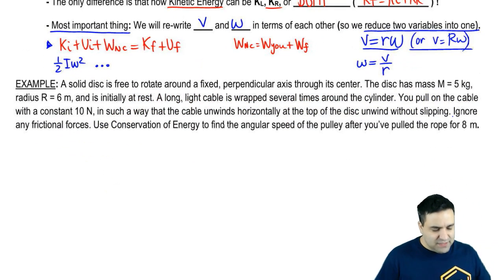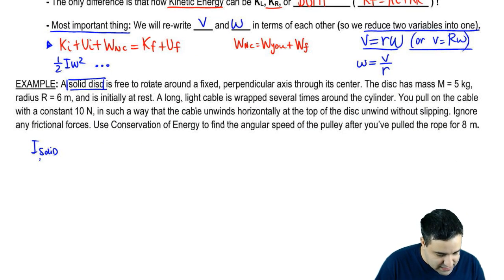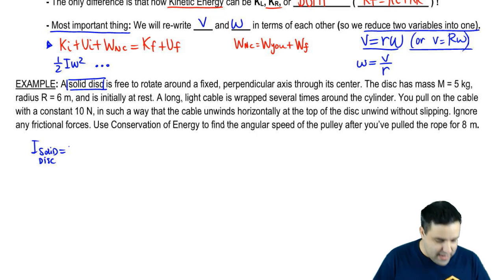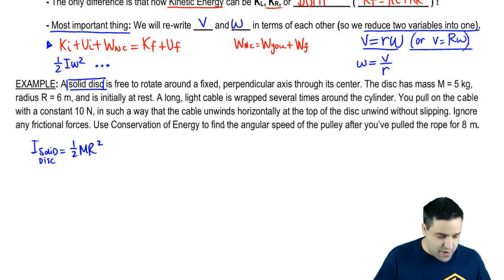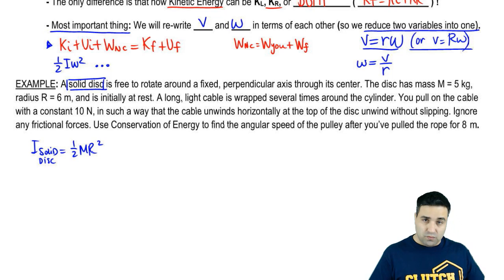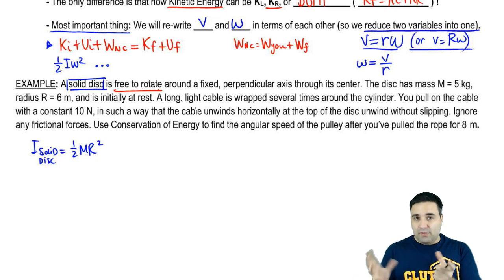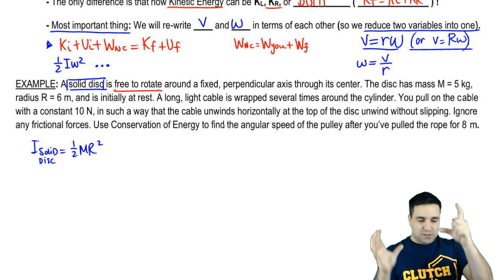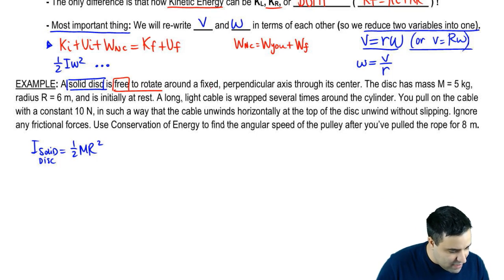Let's do an example. Here we have a solid disk—solid disk means the moment of inertia we're going to use is the same as a solid cylinder, which is half MR squared. It says it's free to rotate about a fixed perpendicular axis through its center. Free to rotate just means you can actually spin. Even though it says free to rotate, it's around a fixed axis.